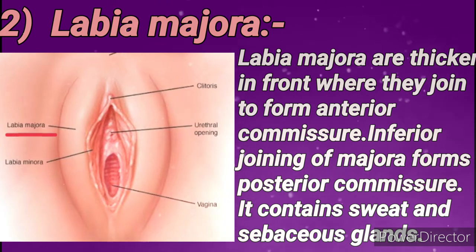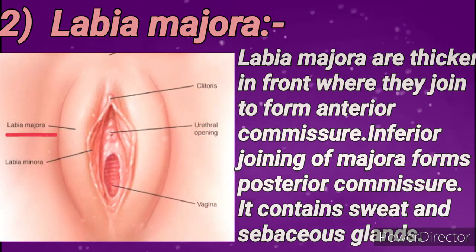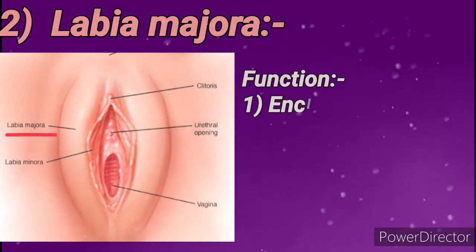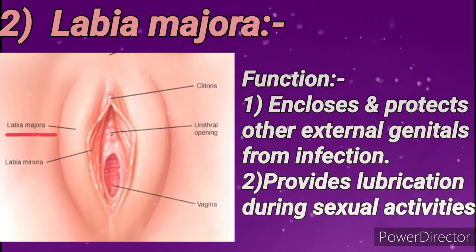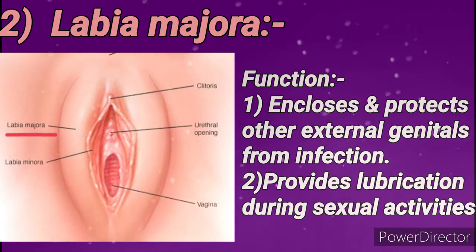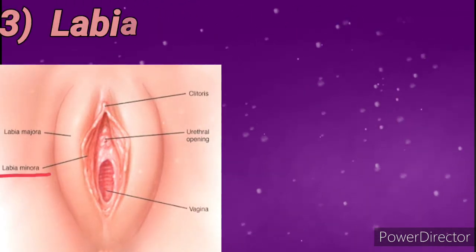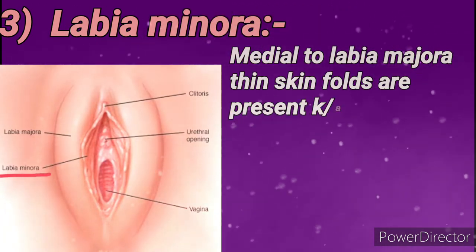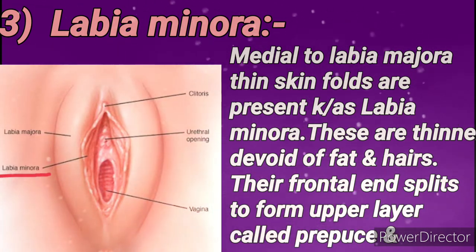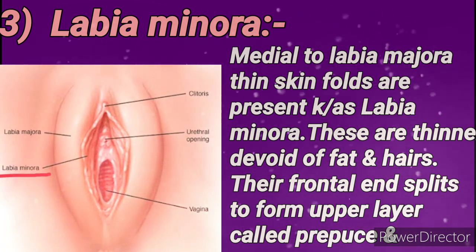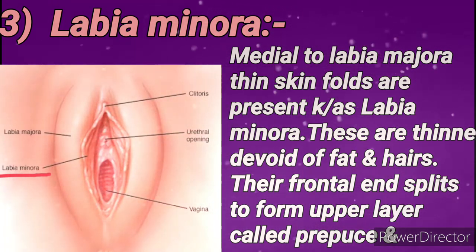Labia majora mainly provides protection to other external genitals and also provides lubrication during sexual activities. Next is labia minora — medial to labia majora, thin skin folds devoid of fat and hair, which are known as labia minora. Their frontal end splits to form an upper layer known as the prepuce and a lower layer known as the frenulum of clitoris respectively.